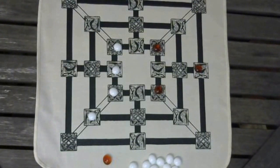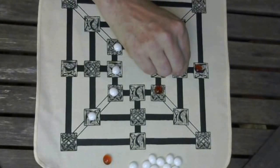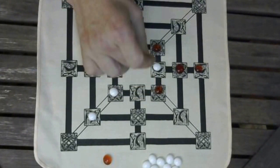The players continue that way, taking turns putting pieces on the intersections of the lines, trying to make three in a row, or trying to block their opponent from making three in a row.